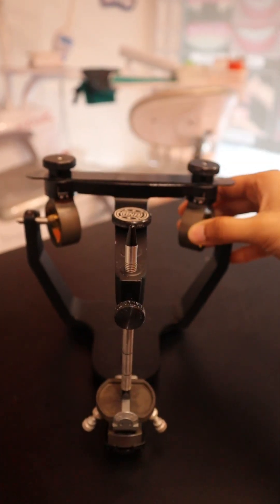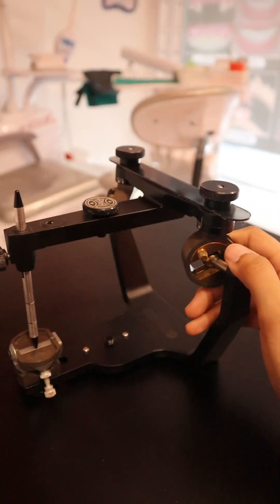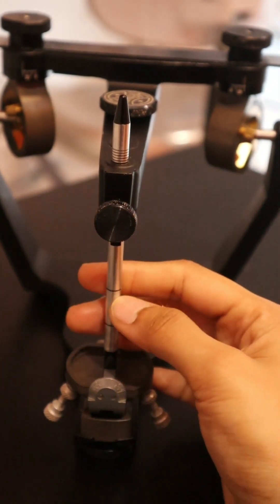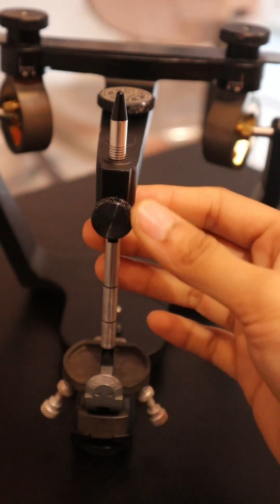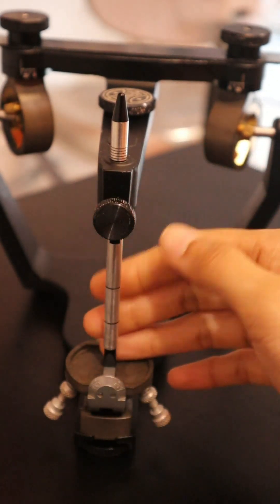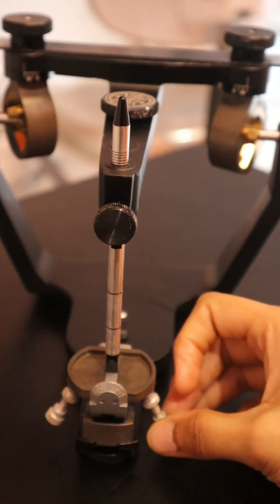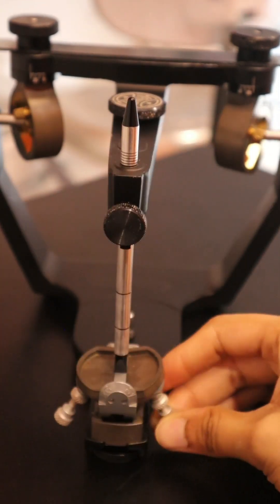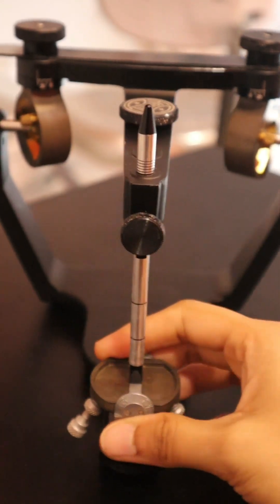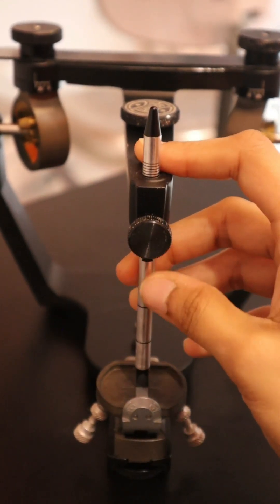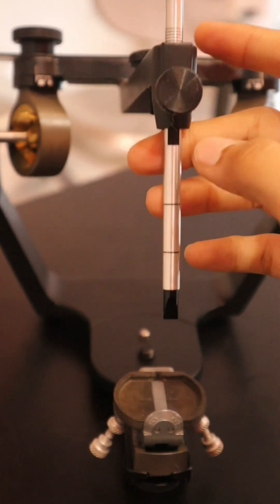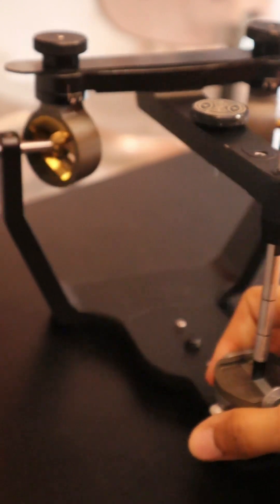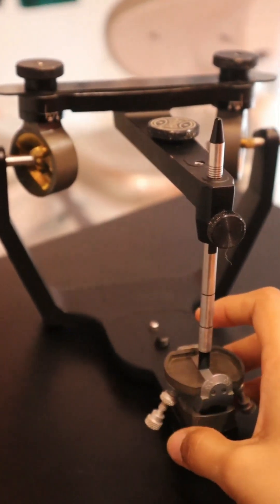As I will show you one by one, all the major parts of the articulator include the incisal pin and incisal guide table. You can see the marks on the incisal pin as well. This incisal guide table also has lateral wings which can be adjusted with these screws. You can actually adjust the lateral inclination. As you can see, I have shown you two markings—these are the actual horizontal markings from which we can take a reference for teeth arrangement.